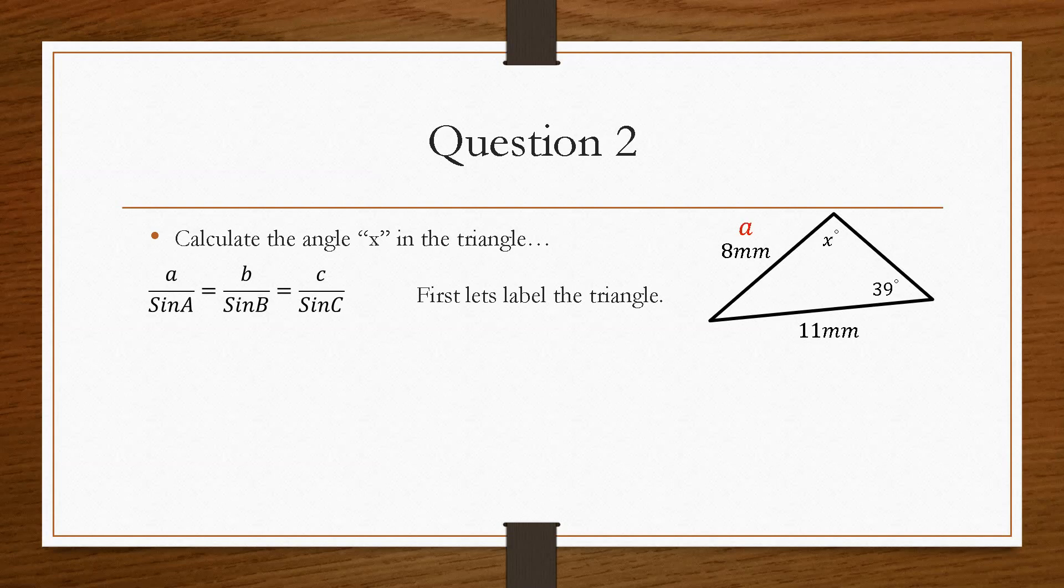So we'll call 8 millimeters small a, which means the reciprocal angle must be 39. That means the 11 millimeters is small b, with the reciprocal being x for capital B. So again, we neglect the C term and we substitute in the values.